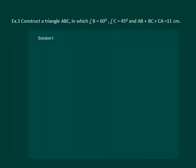Let us read the question. Construct a triangle ABC in which angle B equals 60 degrees, angle C equals 45 degrees, and AB plus BC plus CA equals 11 centimeters.